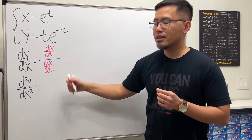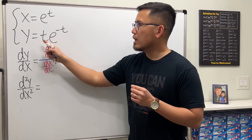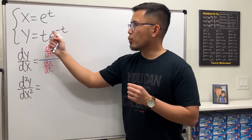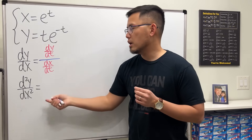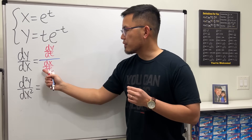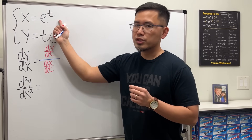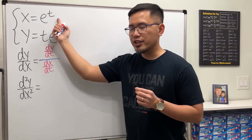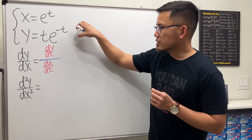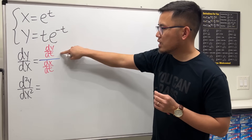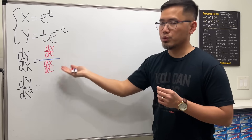And we're done. For dy/dt, we just look at the y equation and differentiate that with respect to t. Likewise, for dx/dt, we look at the x equation and differentiate that with respect to t. At the end, just take that derivative and divide it by that derivative and we are done.